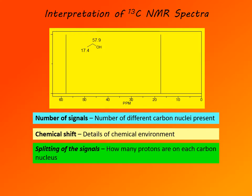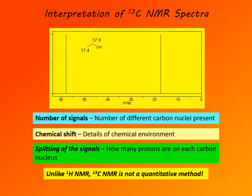One very important difference between proton and carbon-13 NMR spectra is that carbon-13 NMR spectroscopy is not a quantitative method. So there is no integration of the signals. The area under the peak does not correspond to the number of carbon atoms — we cannot use it to determine the number of a particular type of carbon atoms giving rise to each signal.